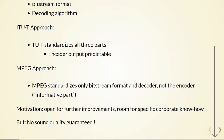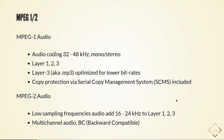The MPEG-1 audio consists of audio coding from 32 to 48 kilohertz, mono or stereo. It has three layers: layer 1, layer 2, and layer 3, where layer 3 — also known as MP3 — is optimized for lower bit rates. The MPEG-1 audio also includes copy protection via a Serial Copy Management System, SCMS.